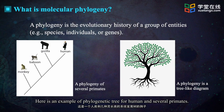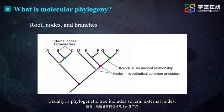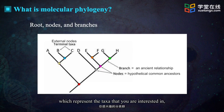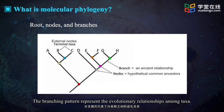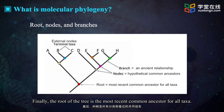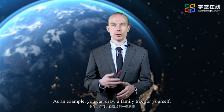Here is an example of a phylogenetic tree for humans and several primates. Usually, a phylogenetic tree includes several external nodes, which represent the taxa in which you are interested, and internal nodes, which represent the hypothetical common ancestor. The branching pattern represents the evolutionary relationship among taxa. Finally, the root of the tree is the most recent common ancestor for all taxa.